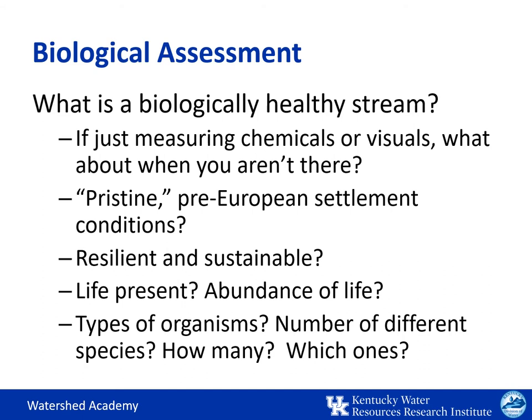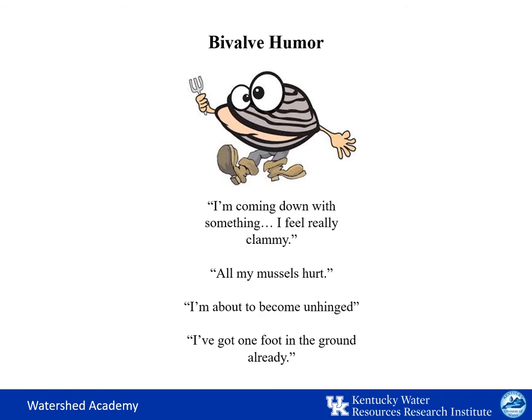So how can we judge whether a stream is healthy? Should we compare it to pre-European settlement conditions? Is there enough to show that current organisms are resilient and sustainable? How much life should be present? How many types of organisms? Does their life cycle, feeding cycle, rarity, or sensitivity to pollution matter? It would be nice if we could interview aquatic organisms to ask if their community is healthy, but unfortunately we can't. So what alternatives are available for biologists?